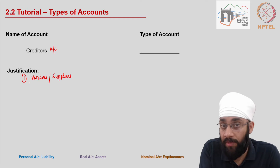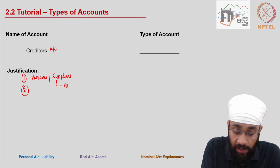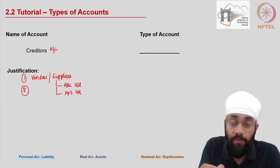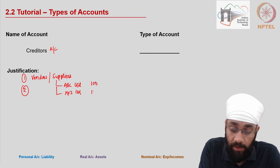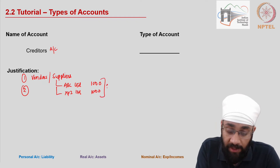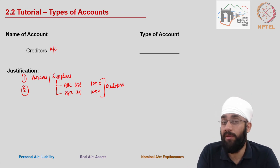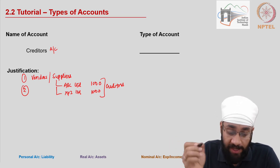The creditors may have a name. For example, vendors could be ABC Limited or XYZ Limited, and you owe them different amounts. Collectively, these vendors are called creditors. There can be one creditor or there can be tens of creditors as well.